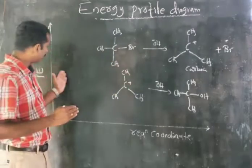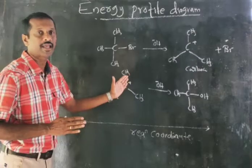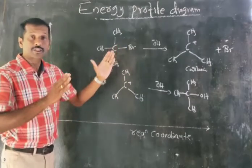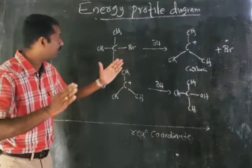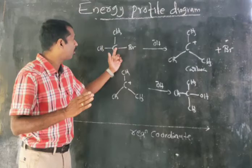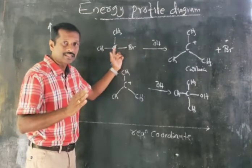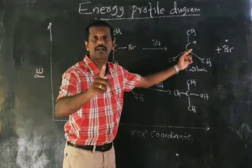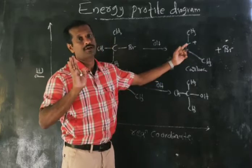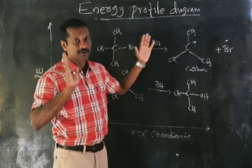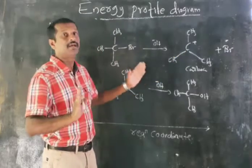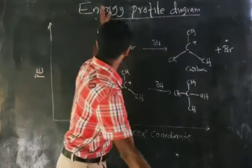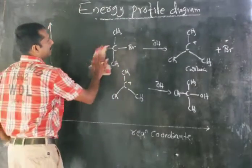Keep these steps in mind before going through the energy profile diagram. The first step is the slow cleavage of the C–X bond. The C–X bond breaks heterolytically and forms a tertiary carbocation — that is the first, slow step.